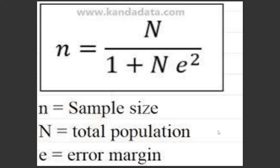This is the Slovin's formula: small n (sample size) equals capital N (population size) divided by the quantity one plus N times e squared, where e is the margin of error. So: n = N / (1 + Ne²). Nowadays, we also employ a much easier tool to solve for our sample size.